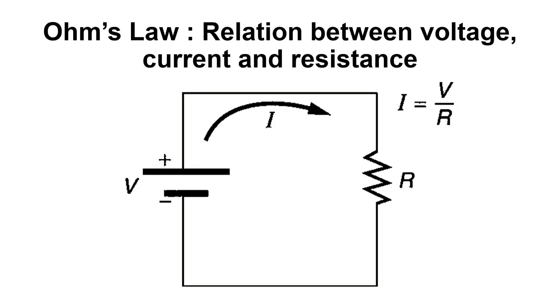Ohm's law states that the voltage or potential difference between two points is directly proportional to the current or electricity passing through the resistance and inversely proportional to the resistance of the circuit.